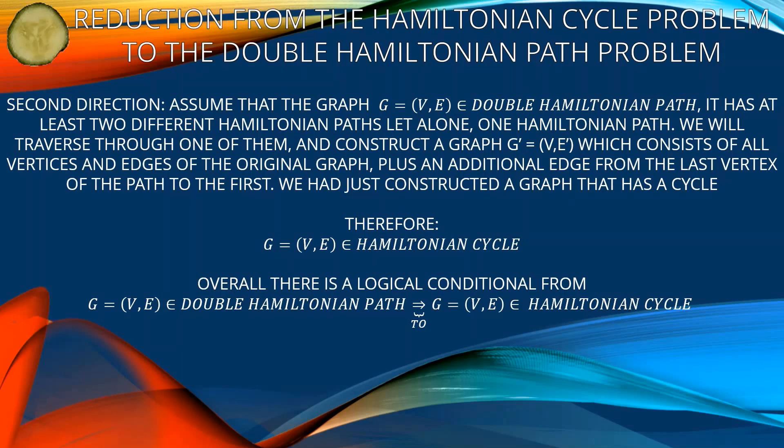We have just constructed a graph that has a Hamiltonian cycle, therefore G = (V, E) is in Hamiltonian cycle. Overall there is a logical conditional from G = (V, E) in double Hamiltonian path to G = (V, E) in Hamiltonian cycle.